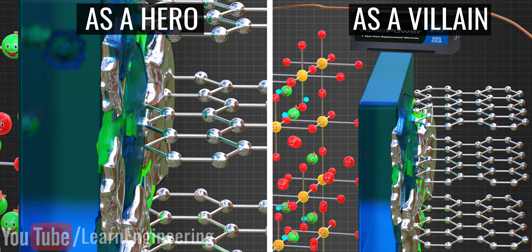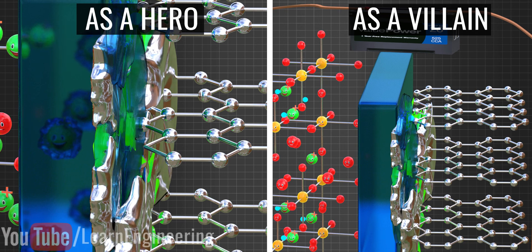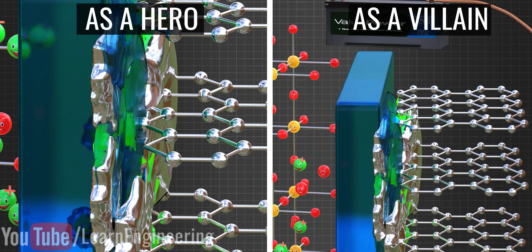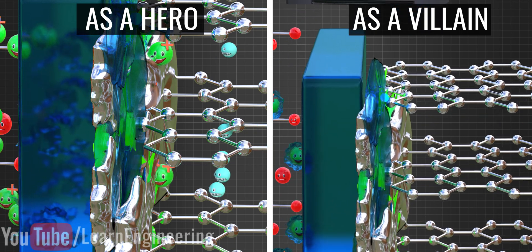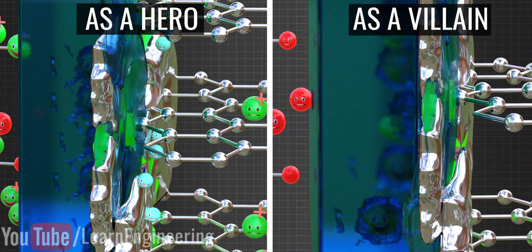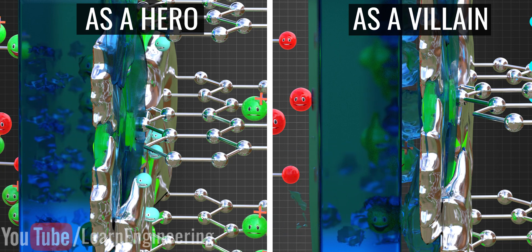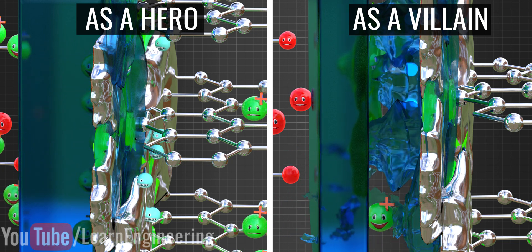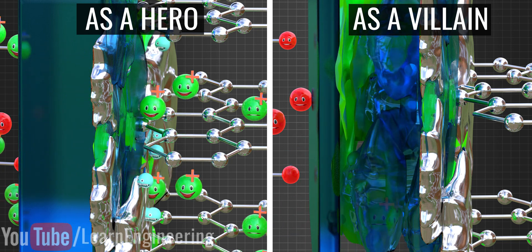From this discussion, it can be seen that the SEI plays a dual role in the battery performance. On the one hand, it protects the electrolyte from degradation and will support the main working of the battery, while on the other hand, it consumes cyclable lithium ions and electrolyte inside the cell, which leads to the death of the battery.